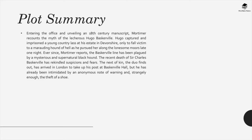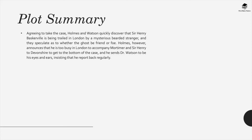The recent death of Sir Charles Baskerville has rekindled suspicions and fears. The next of kin has arrived in London to take up his post at Baskerville Hall, but he has already been intimidated by an anonymous note of warning and, strangely enough, the theft of a shoe. Agreeing to take the case, Holmes and Watson quickly discover that Sir Henry Baskerville is being trailed in London by a mysterious bearded stranger, and they speculate as to whether the ghost be friend or foe. Holmes, however, announces that he is too busy in London to accompany Mortimer and Sir Henry to Devonshire, and so he sends Dr. Watson to be his eyes and ears, insisting that he report back regularly.